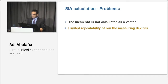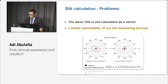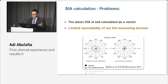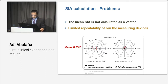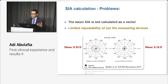Another issue is the limited repeatability of our measuring devices. Looking again at the double-angle plots of corneal astigmatism differences in healthy volunteers measured one week apart — let's do a theoretical exercise and calculate the mean SIA the traditional way. We get a pseudo-SIA, which should be zero because we didn't even touch these corneas. For the IOL Master, we get a pseudo-SIA of 0.35 diopters, and for the LENSTAR, 0.18 diopters — an SIA without touching the cornea, resulting from measurement noise. However, if we use the centroid values, the SIA is zero as it should be.